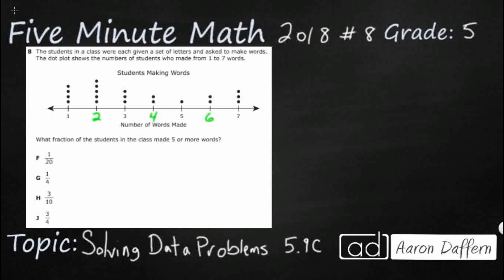There we go. So now we have a complete dot plot, and it shows some students made 1 word all the way up to some students made 7 words.